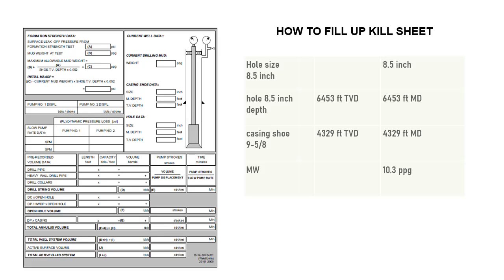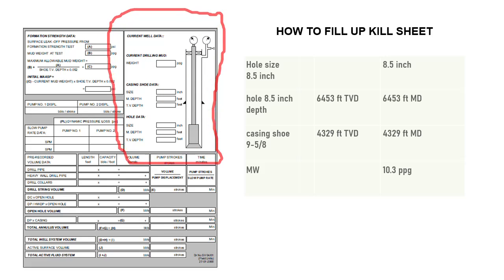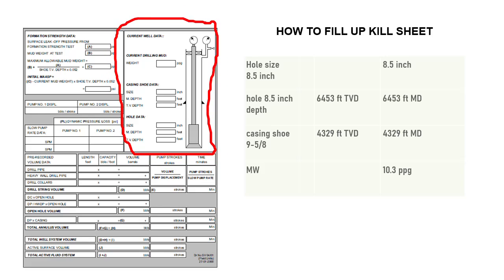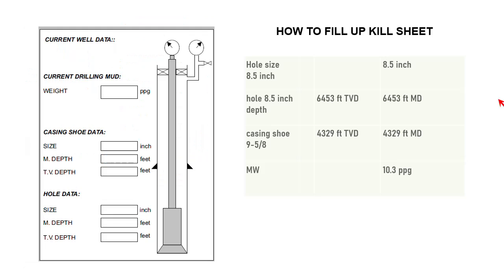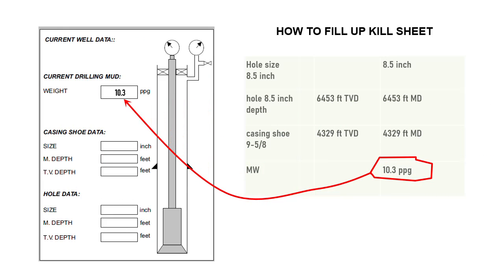We will use surface kill sheet exercise 1 for this example. Let's start to fill up the upper right corner of page 1, as indicated by red marks here. Current mud weight in hole is 10.3 ppg.